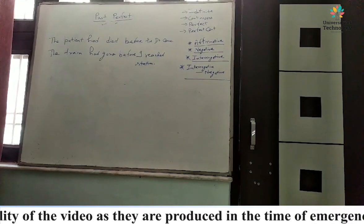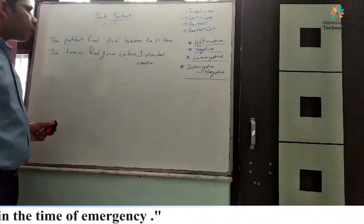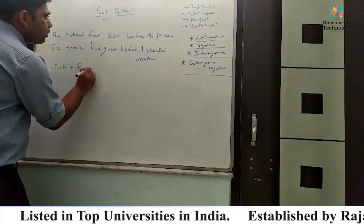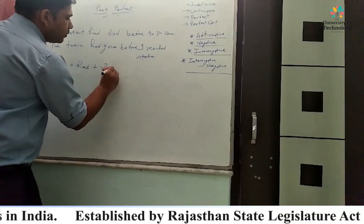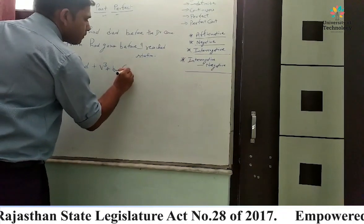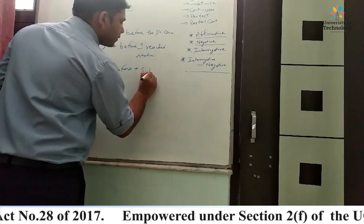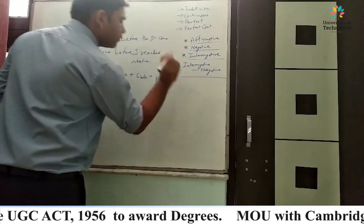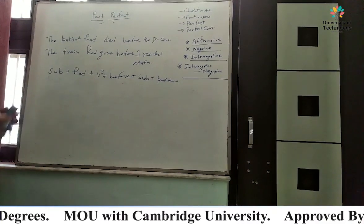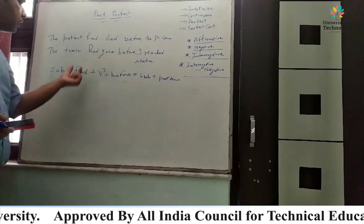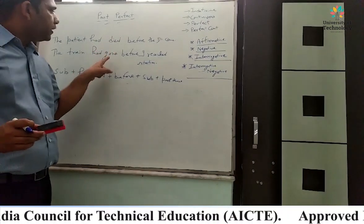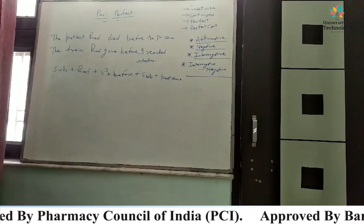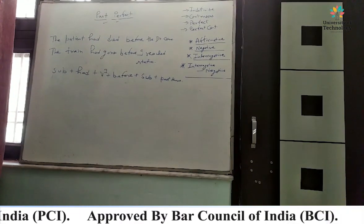So we join two sentences. The syntax is: subject plus had plus verb third form plus object plus 'before' plus subject plus past tense. For example: 'The patient had died before the doctor came.' 'The train had gone before I reached the station.'